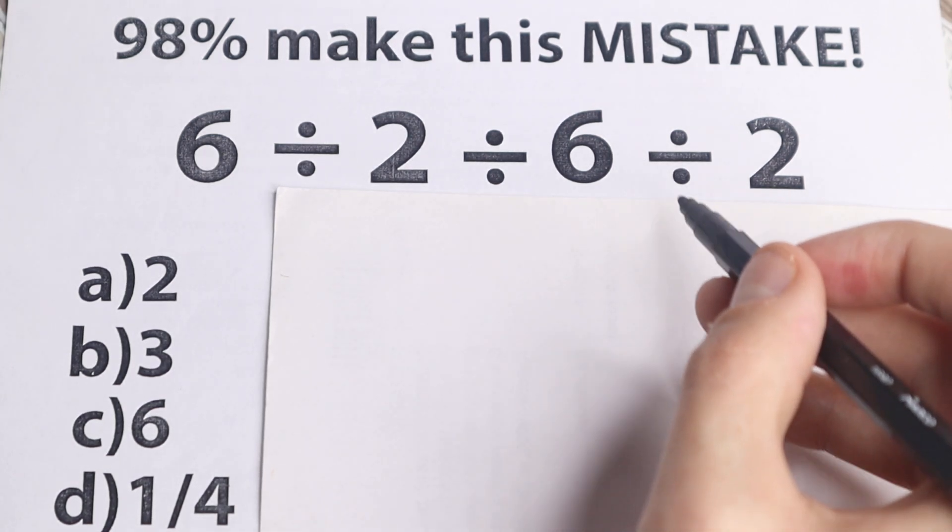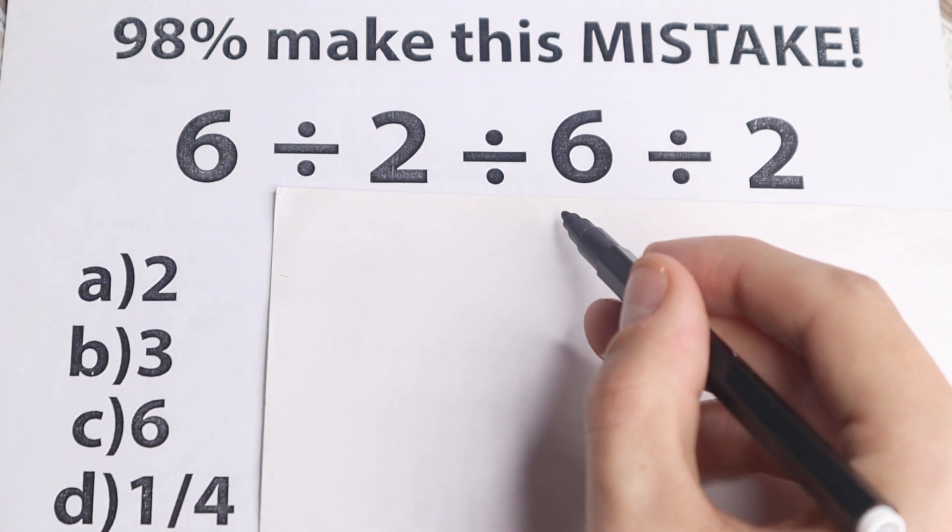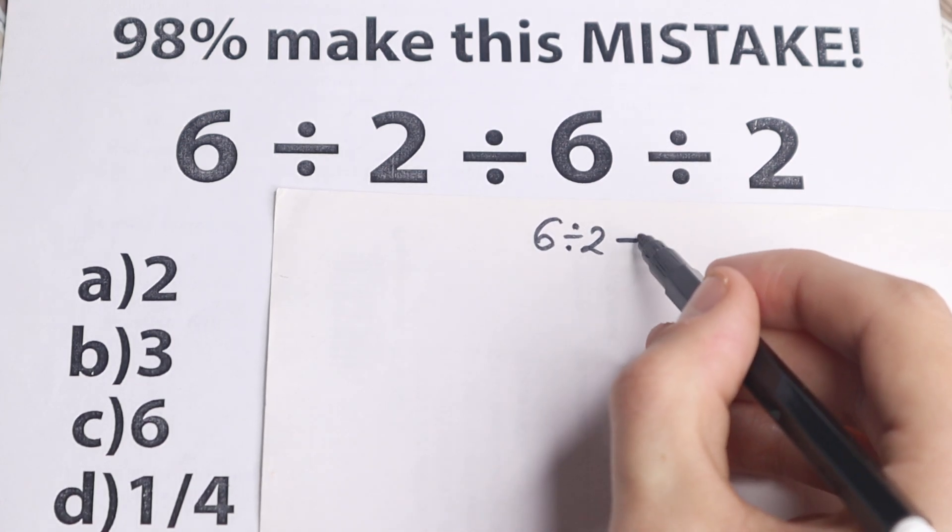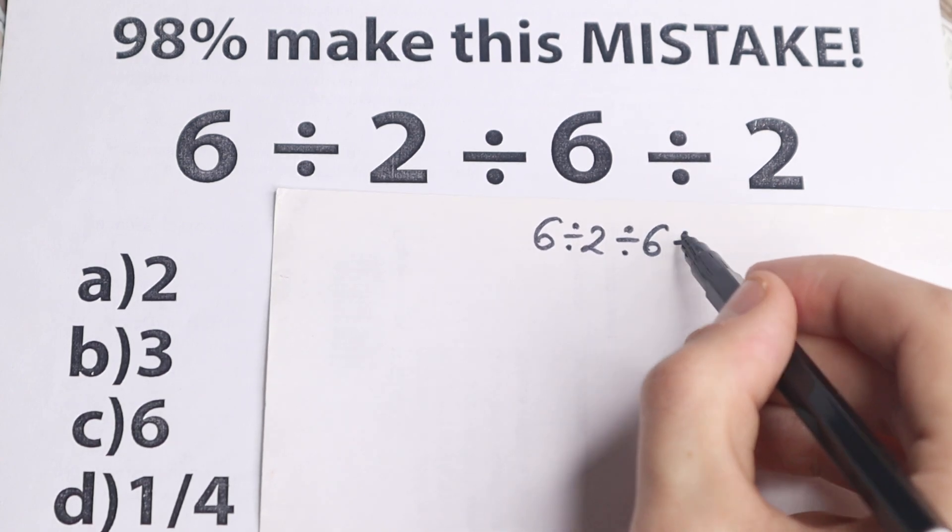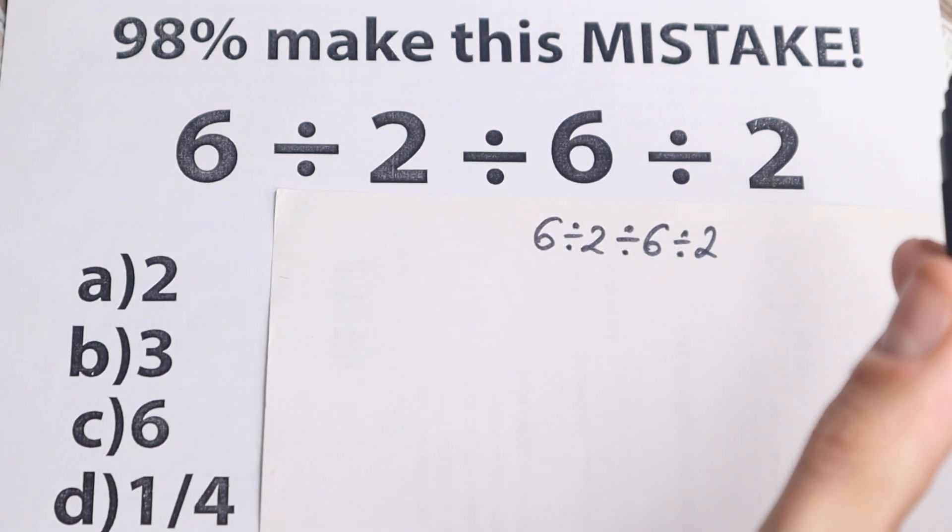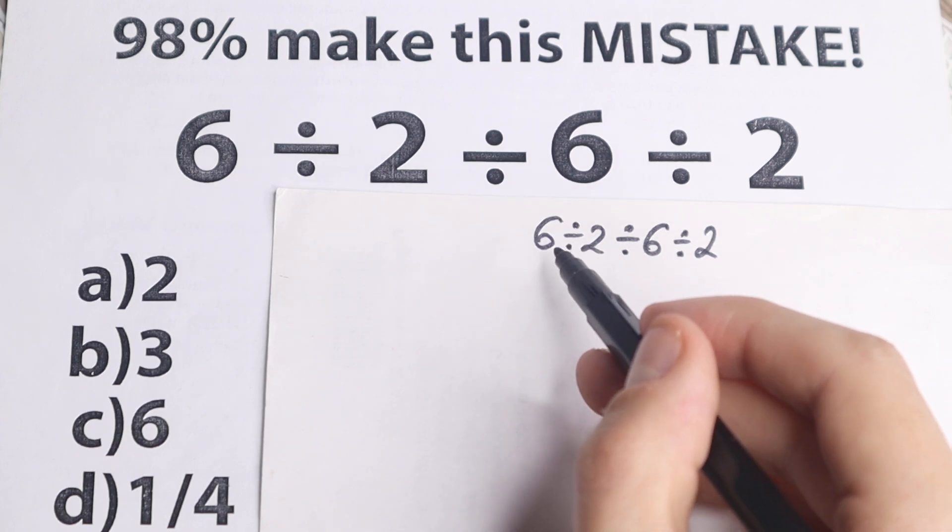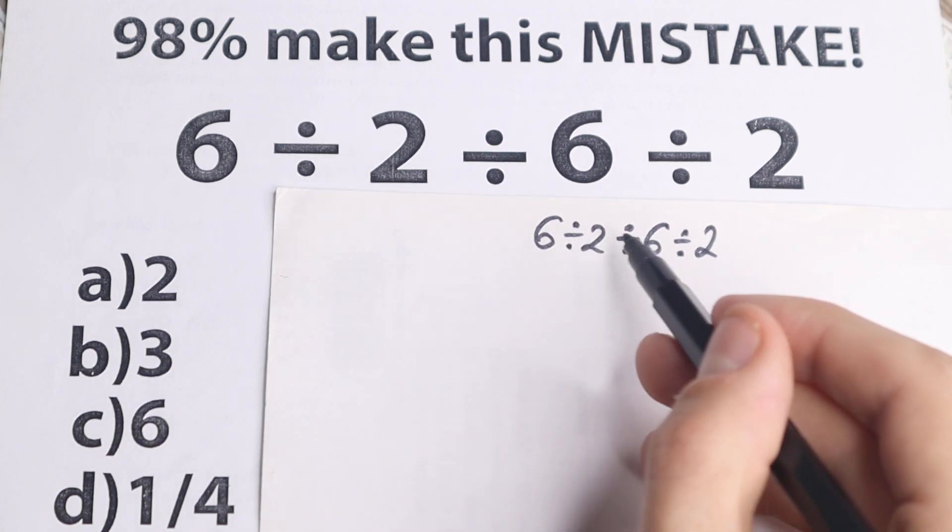Okay, let's try to solve it. First of all, I'm going to start with this approach. So we have 6 divided by 2, divided by 6, and divided by 2. So I don't want to tell that this is correct or incorrect, I'm going to show you this approach that many students solve it like that.